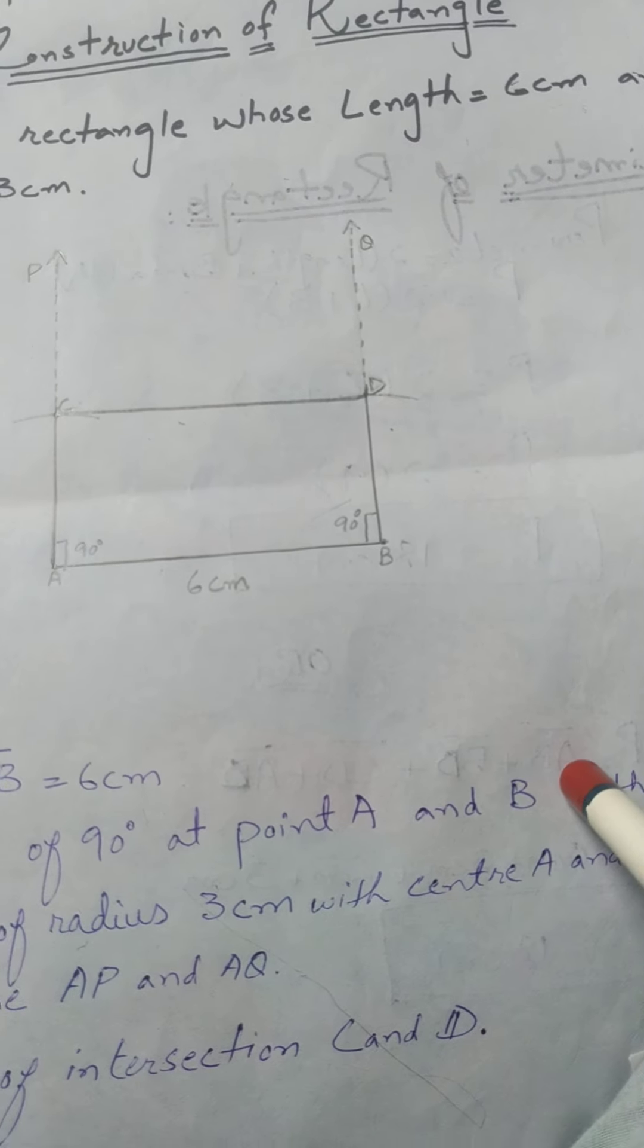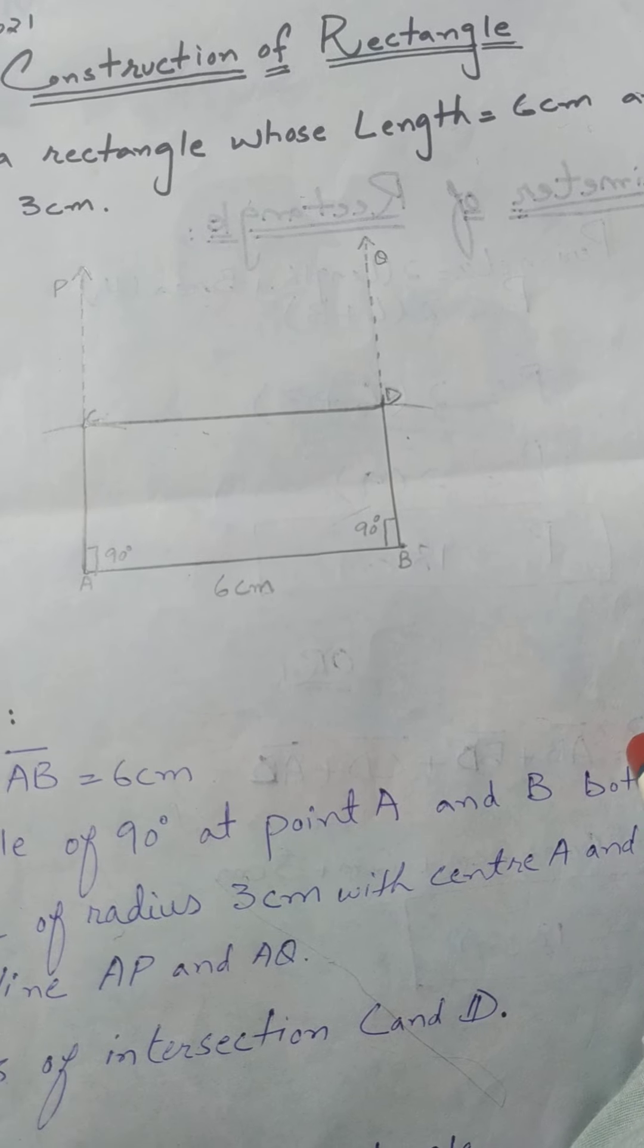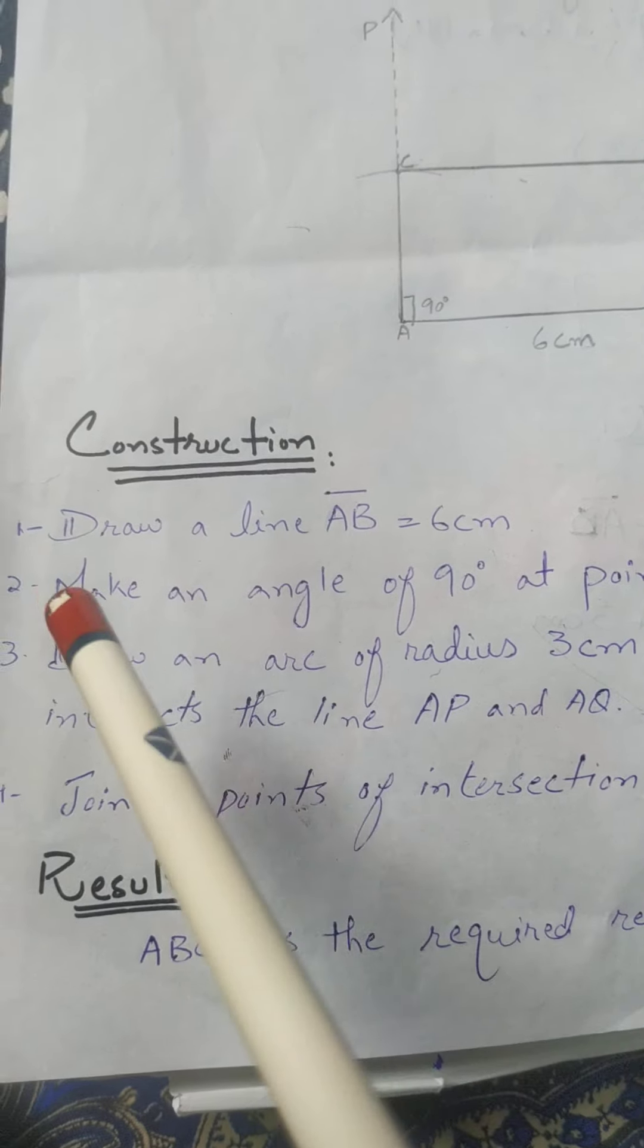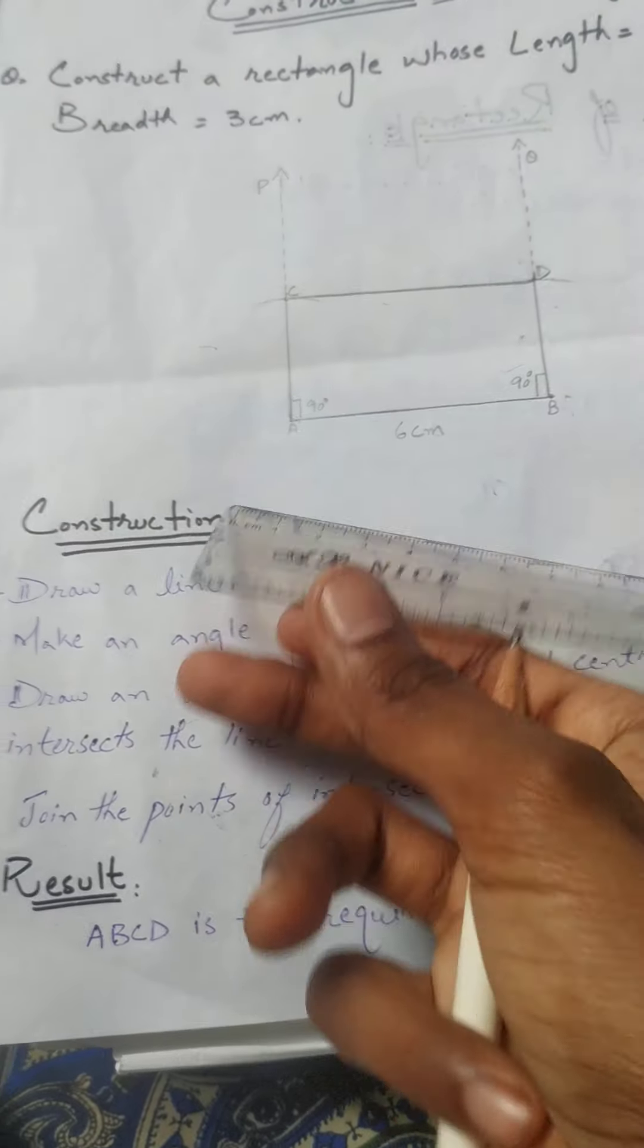The rectangle is horizontal. The first step to draw a rectangle is to draw a line AB that is 6 cm.